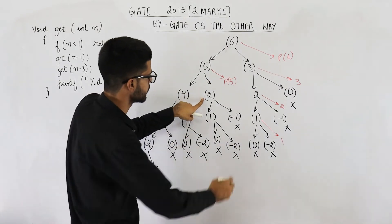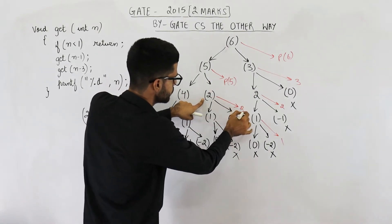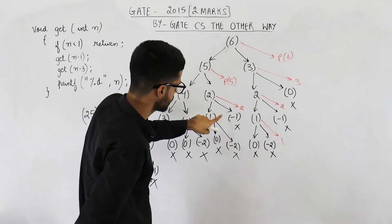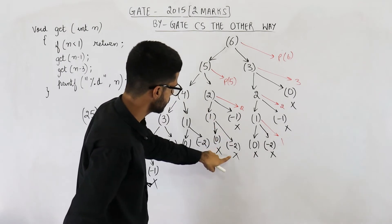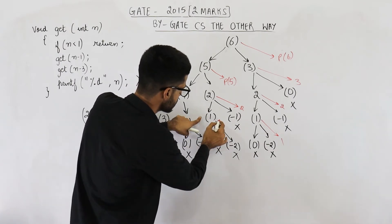Now let us come to the left side. This function will print 2. The base-case nodes will end. This one will end. This one will end. This one will end. This one will print 1.